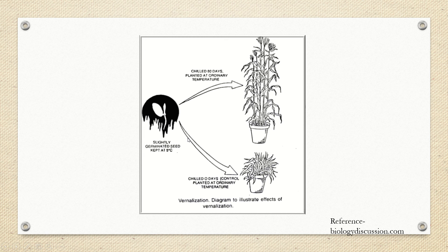On the contrary, when the seed is not vernalized — when it is kept at ordinary room temperature — it gives a rosette appearance, that means stunted growth. This proves that vernalization helps in proper luxuriant growth of plants.